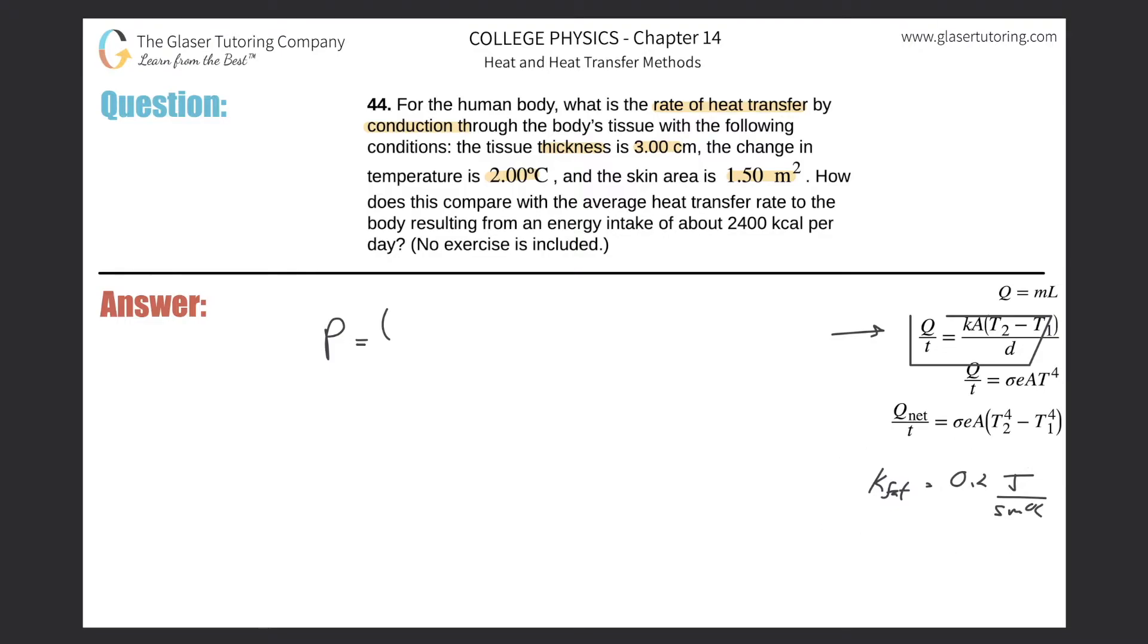The k value here, you have to look that up. I'm just going to use the k for body fat, that's about 0.2. They don't tell us what type of tissue, so I'm just going to use that as the number. The area is going to be 1.5 meters squared, so that's the right units. The change in temperature is going to be two degrees, and then divided by the thickness.